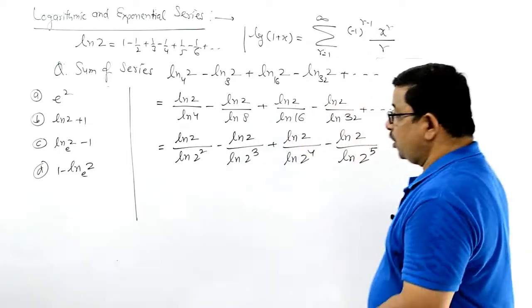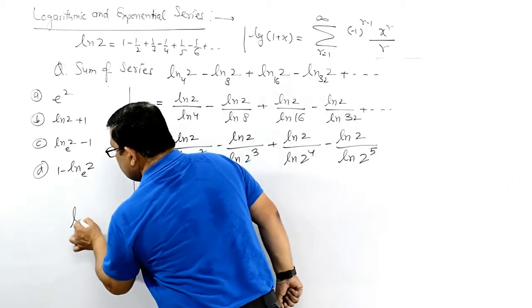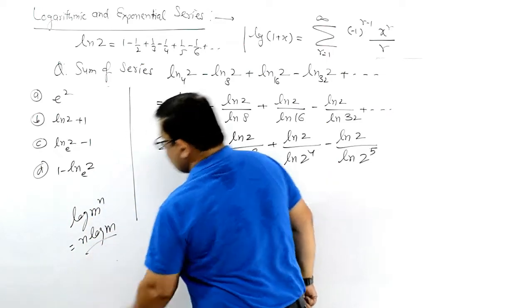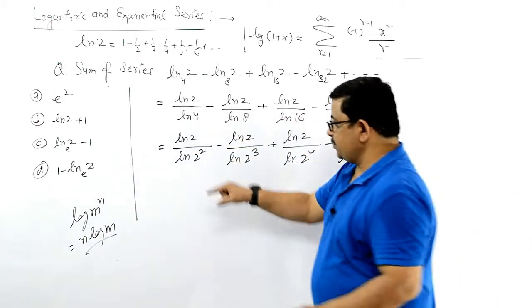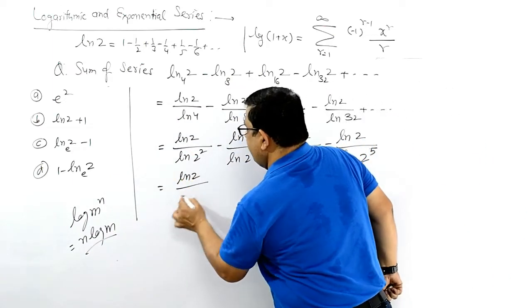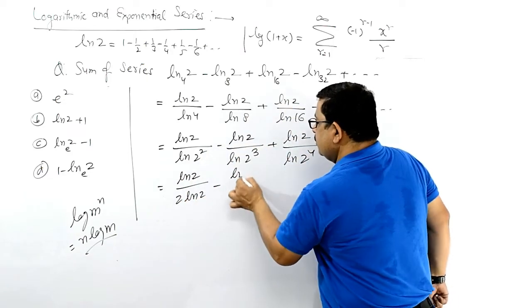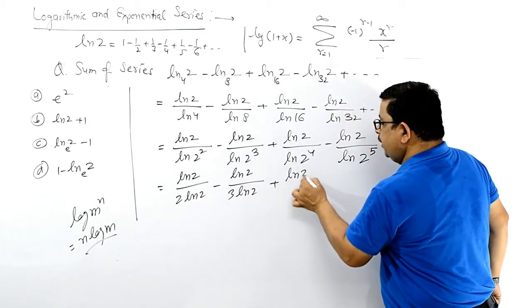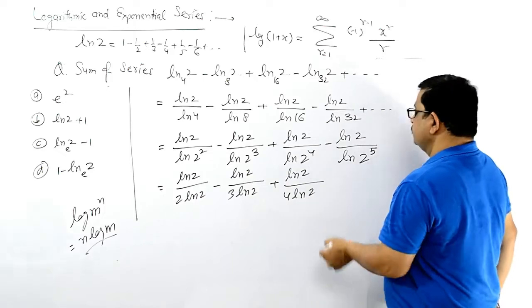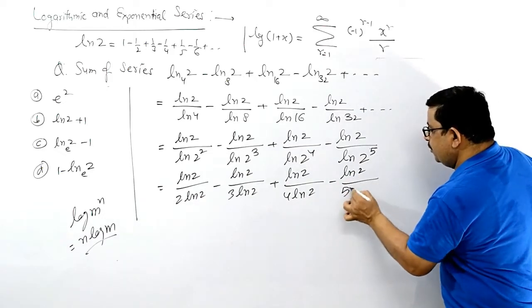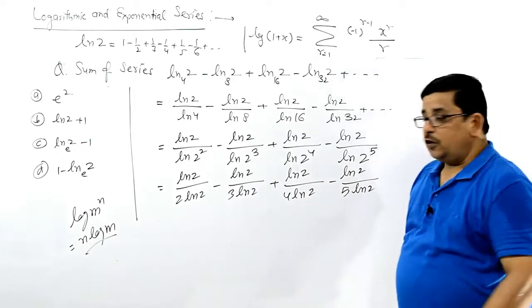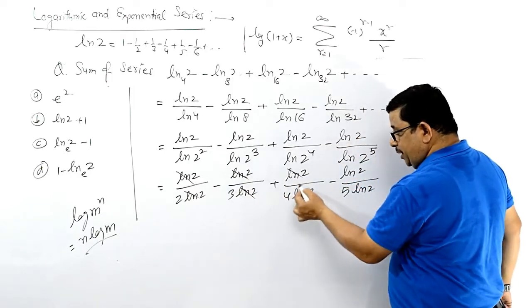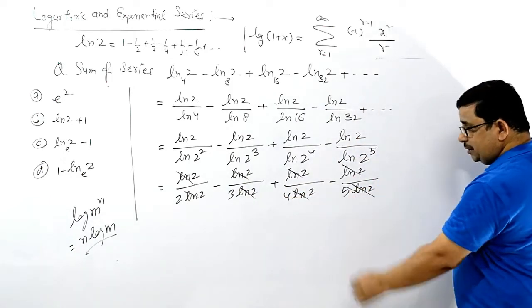जो log का formula है: log(m^n) = n·log(m) होता है। उस formula के according, इस सारे में: ln2 by 2·ln2 minus ln2 by 3·ln2 plus ln2 by 4·ln2 minus ln2 by 5·ln2। यहाँ ln2 cut हो जाएगा — 3 उससे multiplication में है, 4 उससे multiplication में है, तो हम cut कर सकते हैं।